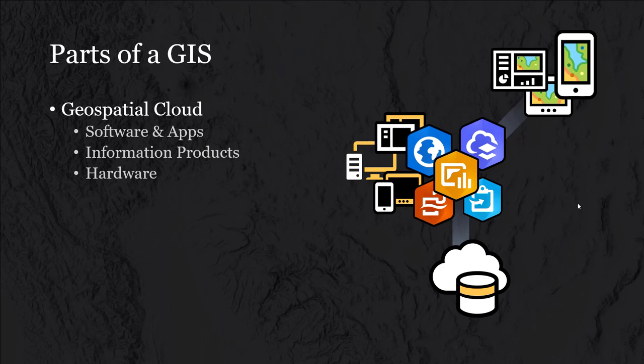Software applications are the way that users interact with maps, analyze data, and create products like that dashboard built by Johns Hopkins. You can think of the software and applications as the primary tools users are using to build maps and interact with data. The information products are the end result — the maps, the applications, the websites that users interact with.